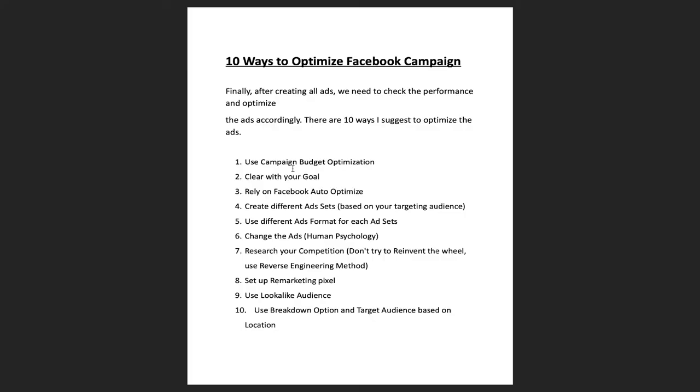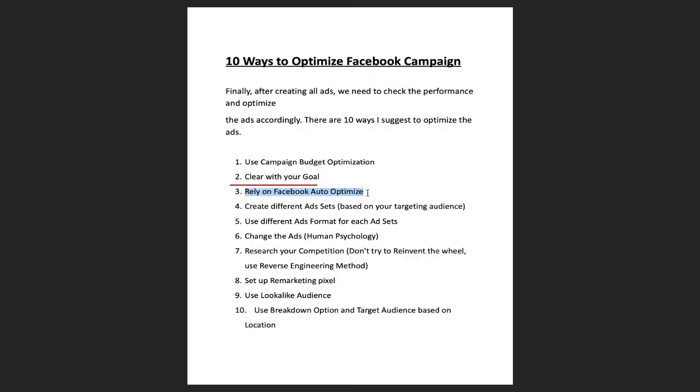The third tip is to rely on Facebook's auto optimization. At the ad set level, you'll have the option to select placements manually — don't do that. Select Facebook's automatic placement option and Facebook will optimize it for you and show your ads to your dream audience. For the bidding strategy at the ad set level, keep it simple and go with the option Facebook recommends. Relying on Facebook's auto optimization method will help you out.